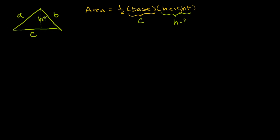We already labeled this as h. Let me define another variable here — this is a trick you'll see pretty often in geometry. Let me define this as x. And if this is x, then that remaining portion would be c minus x, right? This whole length is c, the whole base is c. So if this part is x, then this part is c minus x.